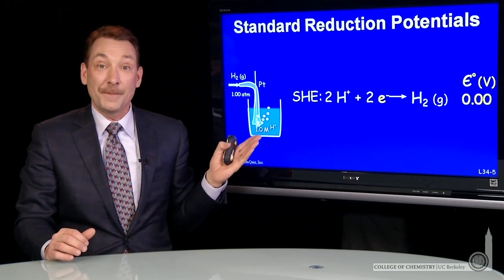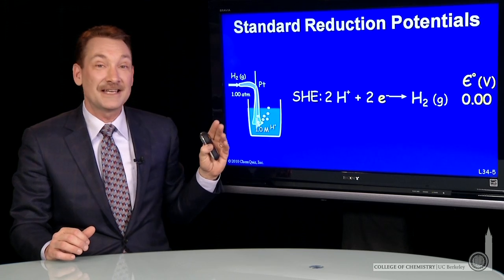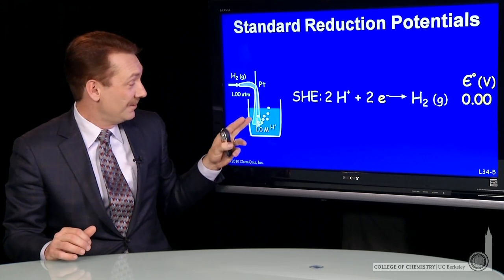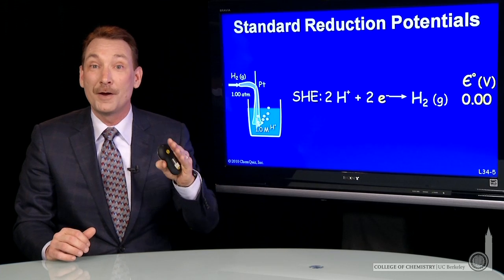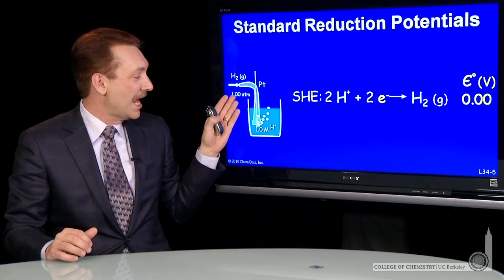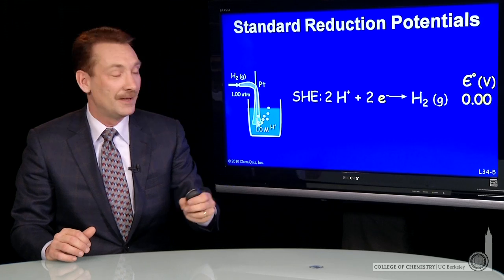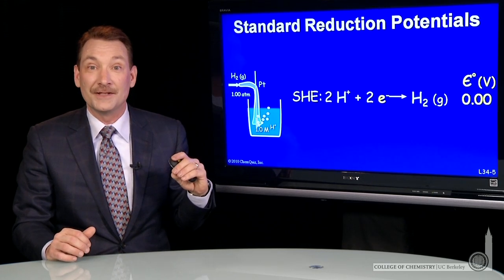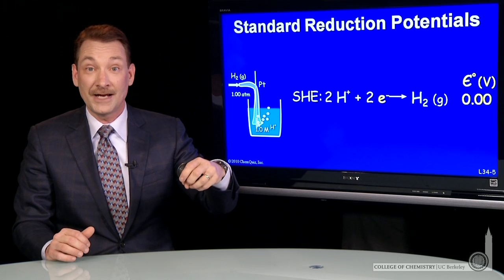How do I physically set that up? Well, I take a beaker and I have hydrogen gas at one atmosphere pressure bubbling into a hydrogen ion solution at one molar. However, the one atmosphere and the one molar are to ensure that I'm at the standard state. I'll put a platinum electrode in there, and the platinum electrode acts as an inert conduit for the electrons to flow.